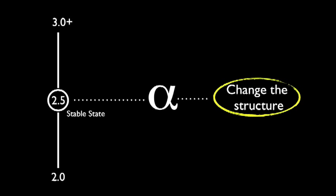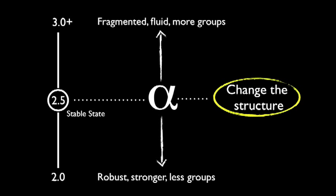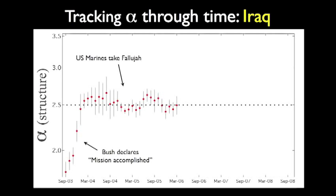We've got to change that. We can push it up — the forces become more fragmented, there are more of them but they're weaker. Or we push it down — they're more robust, there are fewer groups, but perhaps you can sit and talk to them. This graph — no one's seen this before, it's literally from last week — shows the evolution of alpha through time. We see it start and grow up to the stable state, and it stays there through the invasion of Fallujah until the Samara bombings and the Iraqi elections of 2006.